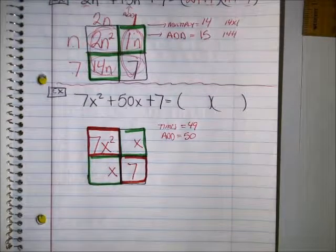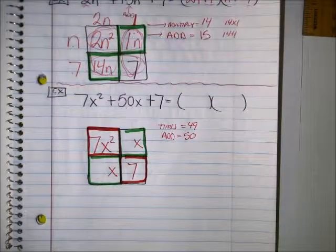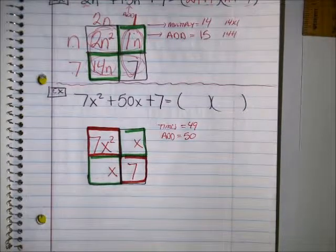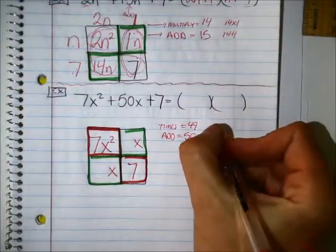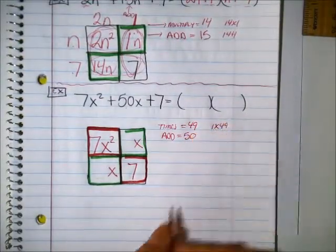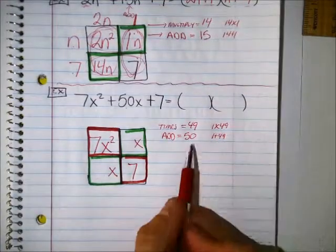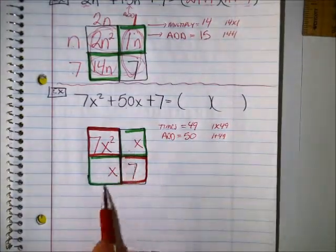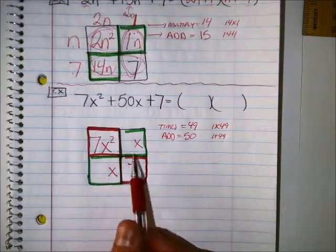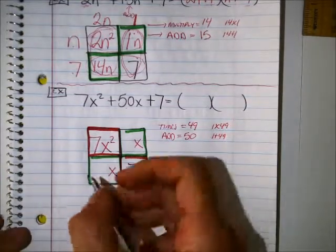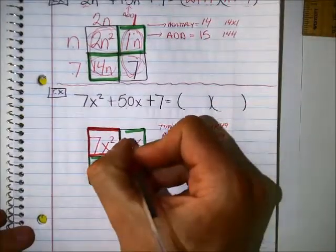Two numbers that times to make 49, but add up to 50. Yeah, honey? Isn't it 1 times 49? It is. 1 times 49 makes 49, and 1 plus 49 makes 50. So these two boxes here have to be 1 and 49. Remember, it doesn't matter where you put them, you'll still get the same answer. I'll put the 1 down here and the 49 up here.